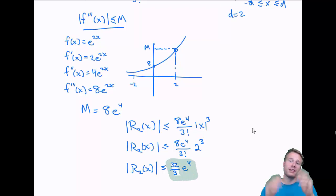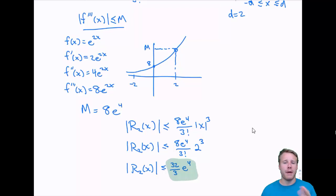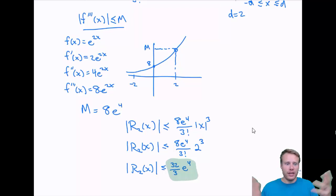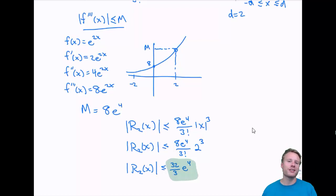This last example is nice because it gives you an actual number — how much you could be off by making this approximation. That does it for all of chapter 11. Take a nice break, then do your homework, and I'll see you next time.